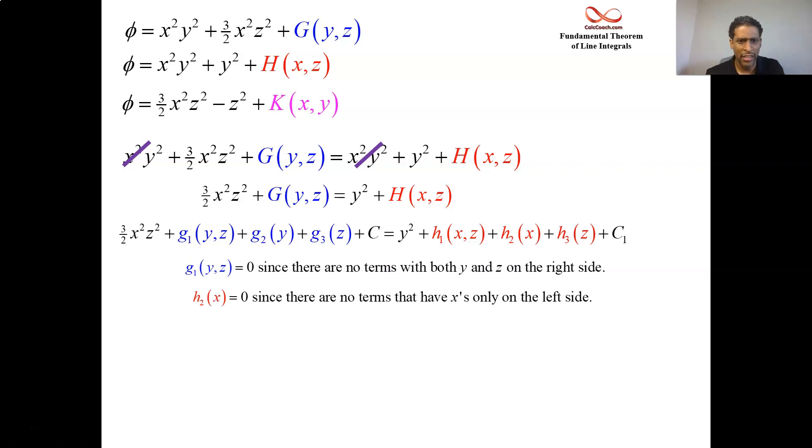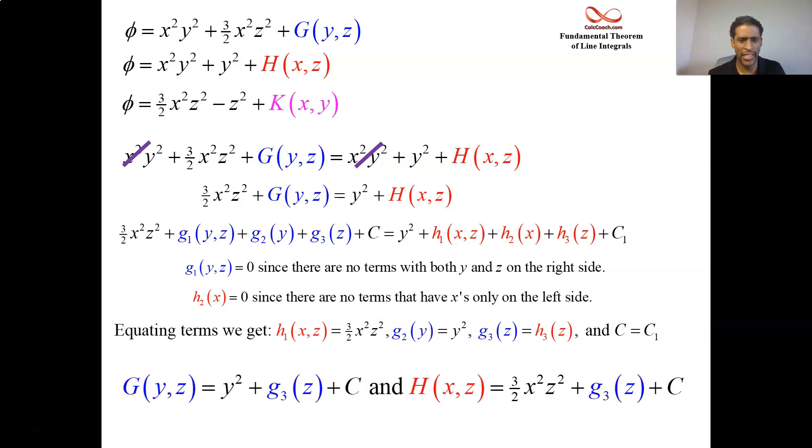The function of h2 of x, there are no x terms only on the left-hand side. So that guy's got to be a zero. And then we can equate terms. And we see that, well, the function of x and z together has to be 3 halves of x squared, z squared. The function of g of 2 of y has to be the y squared. We don't know what g of 3 of z is and h of 3 of z is, but they have to be equal to each other. And then the constants must be equal to each other.